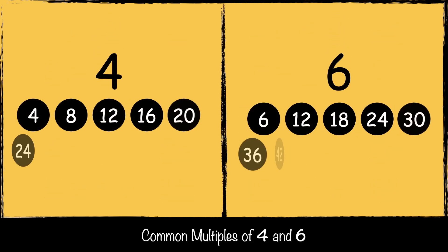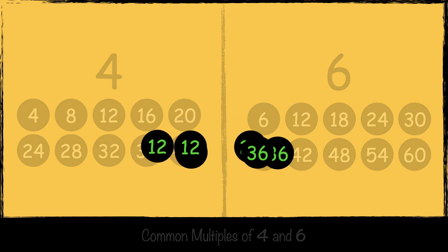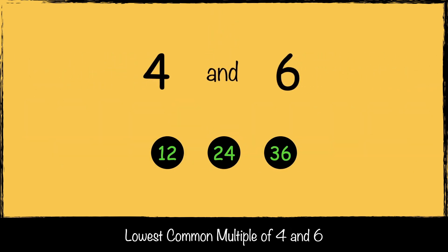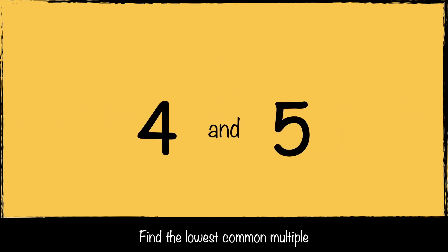Now we can look at the common multiples of four and six — what multiples do they both have? 12, 24, and 36. So the lowest common multiple of four and six is 12. Here's another example: we're going to find the lowest common multiple of four and five.